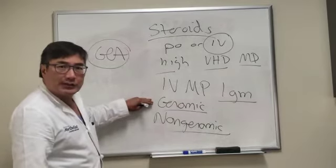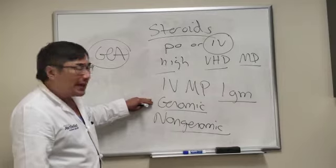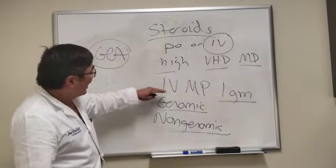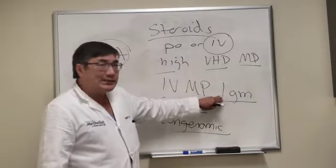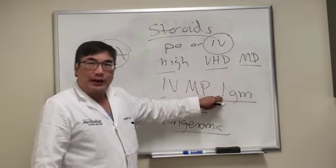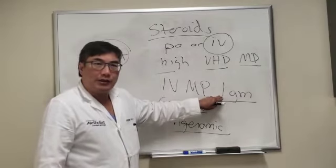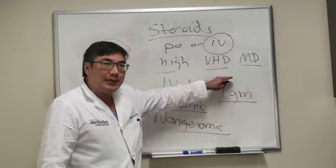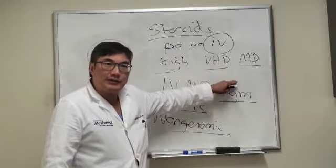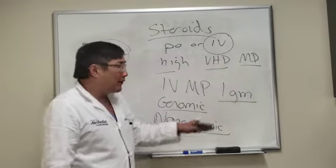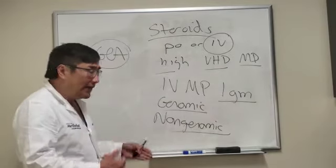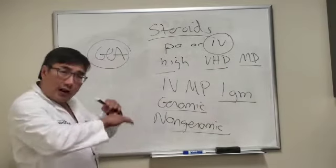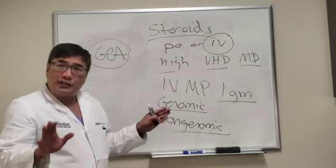So we have both genomic and non-genomic effects. At moderate doses, you pretty much have all your receptors saturated, and so there would be no reason to give one gram of methylprednisolone when 60 milligrams of oral prednisone is doing the exact same thing.